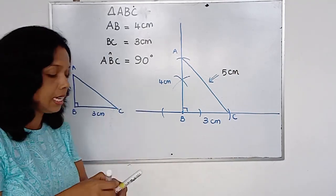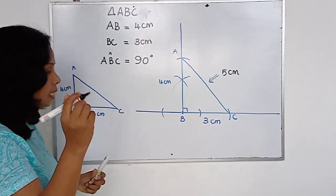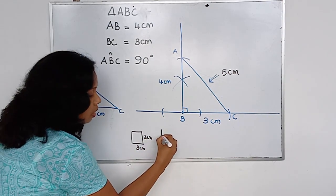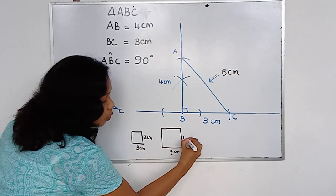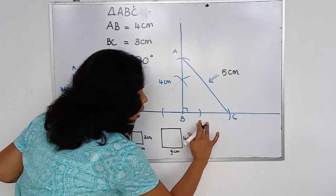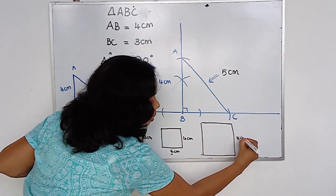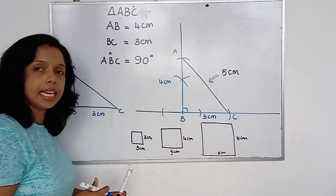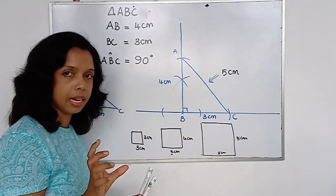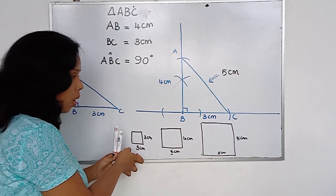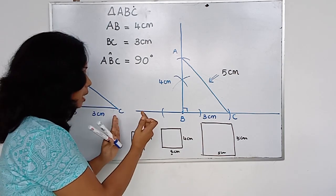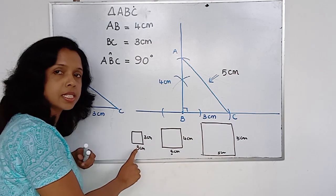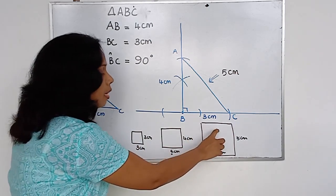Now take another paper and draw 3 squares. One is with 3 centimetres by 3 centimetres, another one is with 4 centimetres by 4 centimetres, and the third one should be a little bit larger — 5 centimetres by 5 centimetres. So you want to have 3 squares like this, and then cut these 3 squares. The first one has a side of 3 centimetres, the second one is 4 centimetres, and the third one is 5 centimetres.